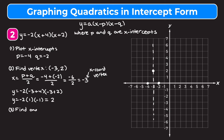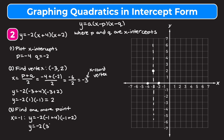Now I'll find one more point. I'm going to plug in x equals negative one — plugging in zero would move the point off the graph. So y equals negative two times negative one plus four times negative one plus two. Negative one plus four is three, negative one plus two is one. Negative two times three is negative six, times one is negative six. So we get the point negative one, comma, negative six. I'll plot that and then mirror it across the axis of symmetry to get the point negative five, comma, negative six, and then sketch a parabola through these points.